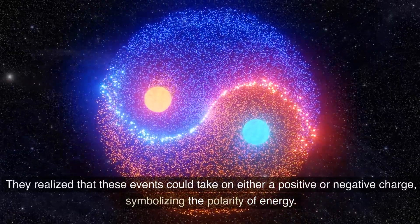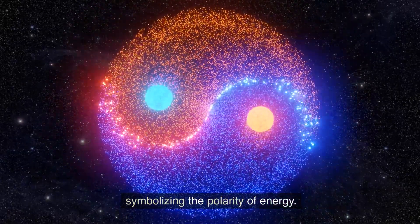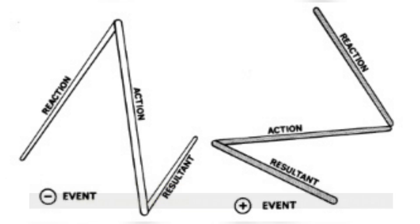They realized that these events could take on either a positive or negative charge, symbolizing the polarity of energy. A negative energy event illustrated the presence of energy as a left helix, while a positive energy event indicated the presence of energy as a right helix.